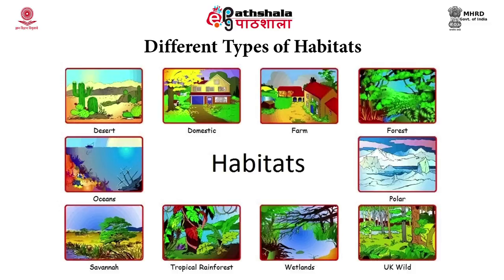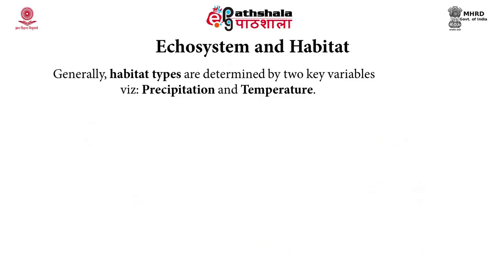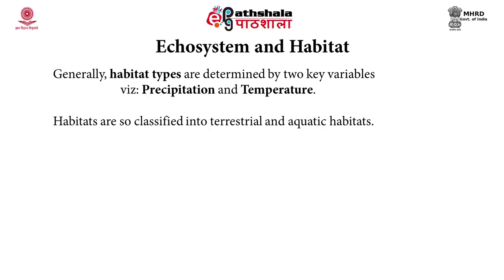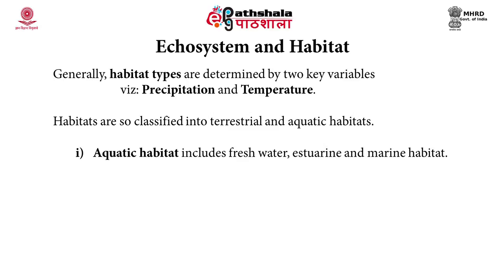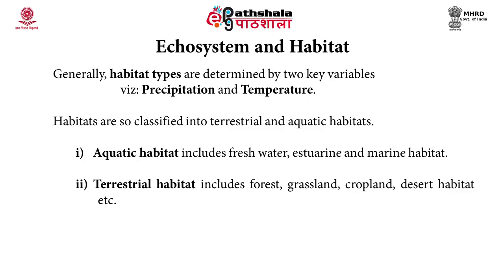Figure 5 shows the various types of habitats, which include domestic, farm, forest, polar, wetland, tropical rainforest, savanna, oceans, deserts, etc. Generally, the geographical distribution of the earth's different habitat types is determined by two key variables: precipitation and temperature. Habitats are classified into terrestrial and aquatic habitats. Aquatic habitats include freshwater, estuarine, and marine habitats. Terrestrial habitats include forest, grassland, cropland, and desert habitat, and are concerned with macroclimate, soil chemistry, nutrient, hydrological cycle, and productivity.